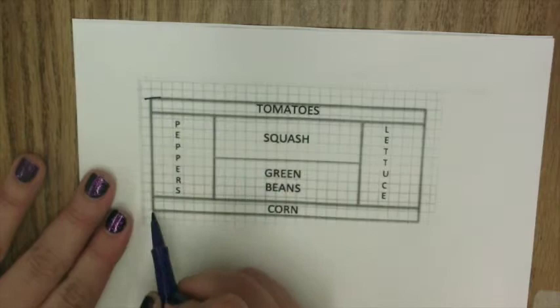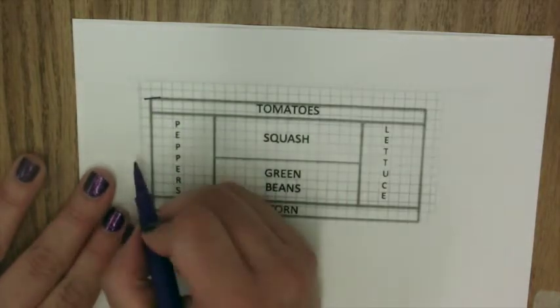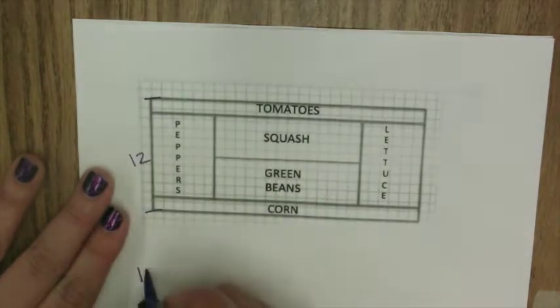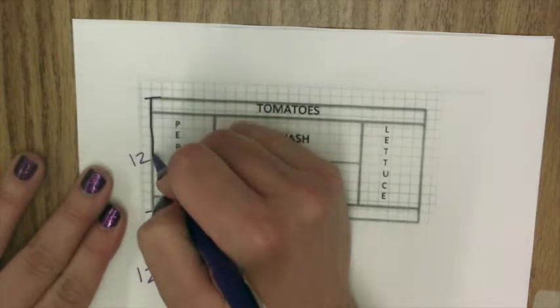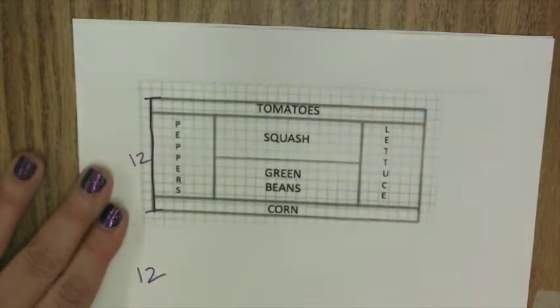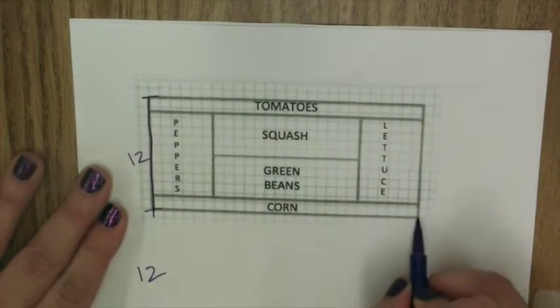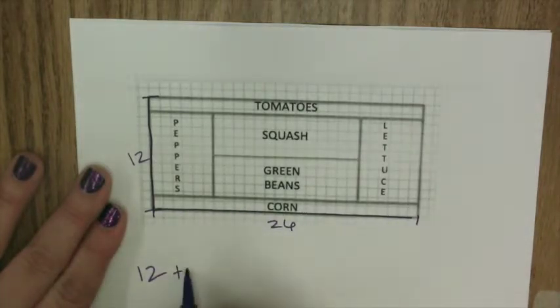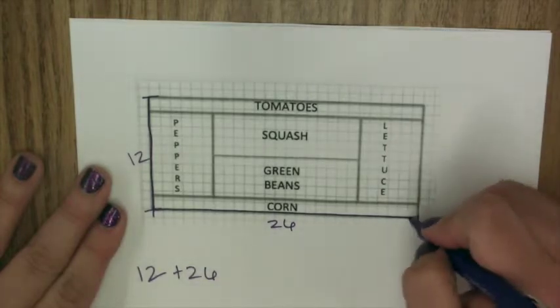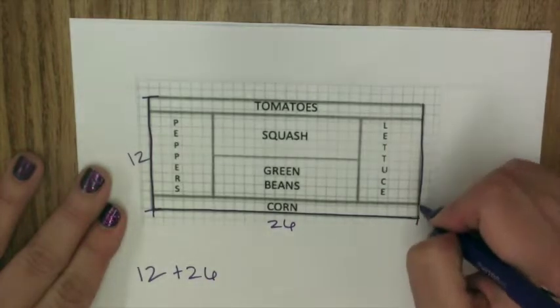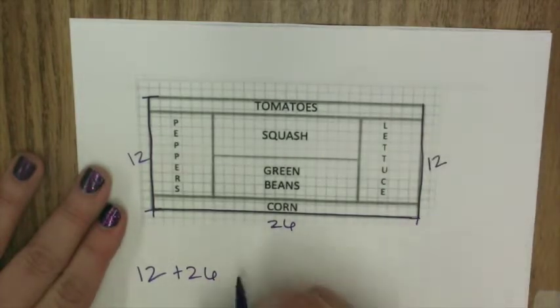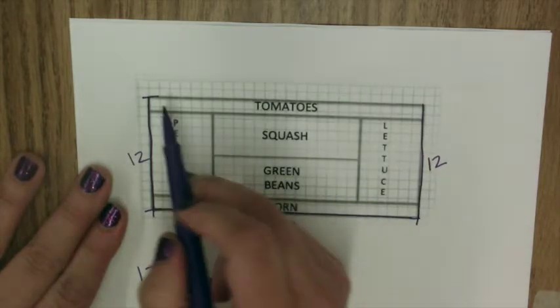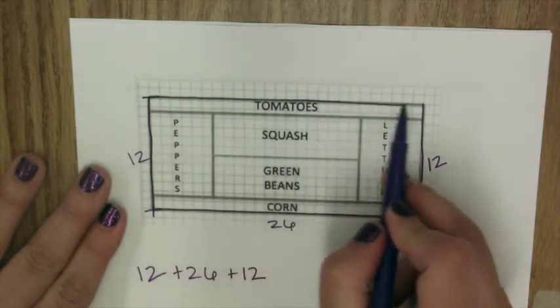So if we were to count here to here, we already know that that is 12. So I'm going to trace over these as I count them so I make sure I don't miss anything. So 12. And then we know that the bottom edge is 26. So plus 26. We would have another 12 here.